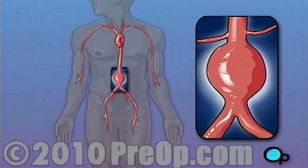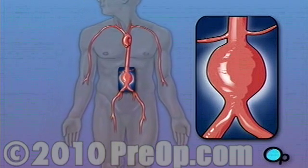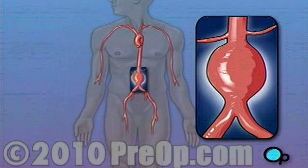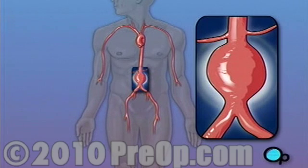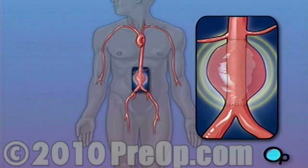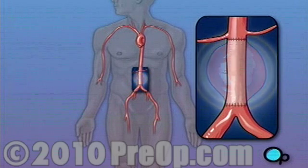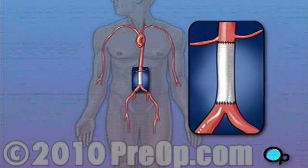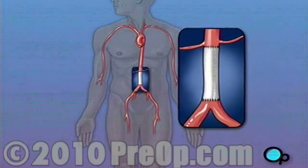Aneurysms are dangerous because the blood clot weakens the blood vessel and can cause it to burst. The surgery your doctor has recommended will remove the blood clot and reinforce the weakened wall of the aorta.